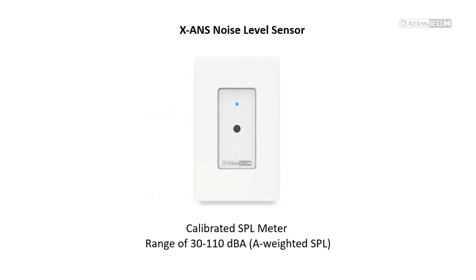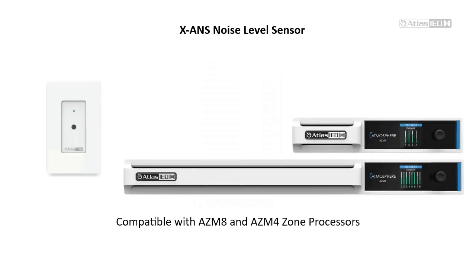Central to our ANC system is the ambient noise sensor. Our AZM processors use the XANS noise level sensor, a calibrated SPL meter with a wide range of 30 to 110 dBA. Each processor supports up to eight of these sensors, which are easily connected and assignable to a zone for ANC processing.